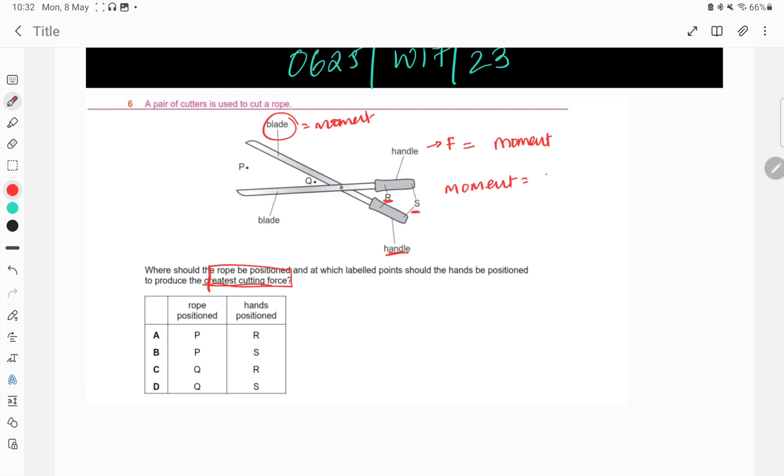So, moment is force into the perpendicular distance from the fixed point. Now, this F remains constant, that could be any value which you are exerting, the only variable is the distance. So, for a larger moment, my distance has to be large, which means I will exert the force at point S. So, my options A and C are out.